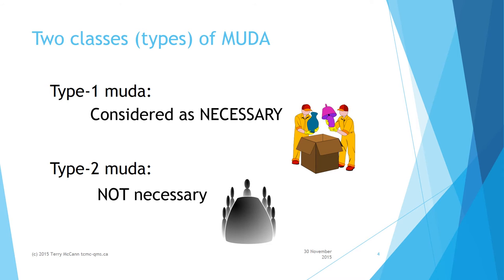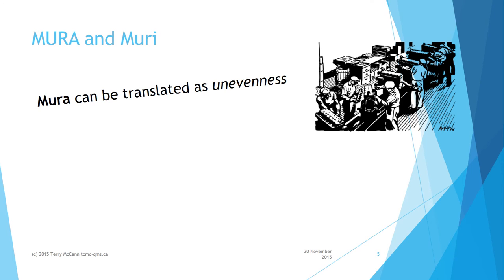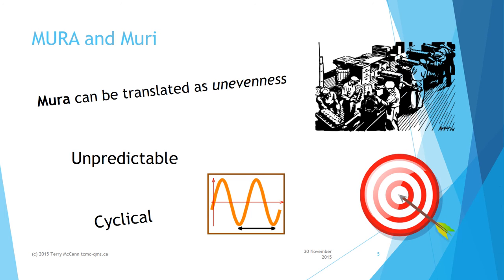Muda is often caused by mura and muri. Mura can be translated as unevenness and refers to the ebb and flow of an uneven tide in the flow of production. It has various causes, often working in combination: a customer may spring an unexpectedly big order, a sale comes through unexpectedly, or we lose a sale we thought was certain, a supplier is waiting on another supplier, or there are issues with absenteeism. Mura is often associated with unpredictability, but sometimes it can be cyclic — slow at the beginning of each month, with pressure building toward month-end and the end of the financial quarter.